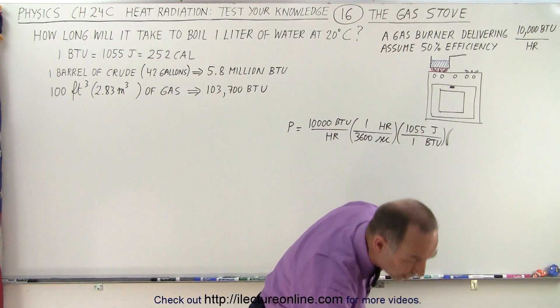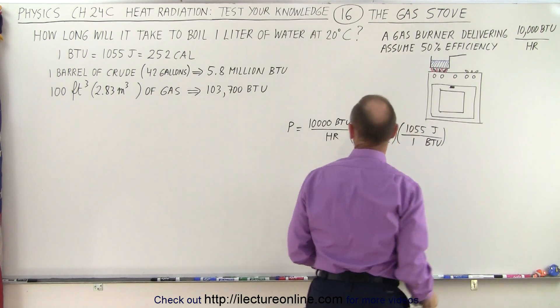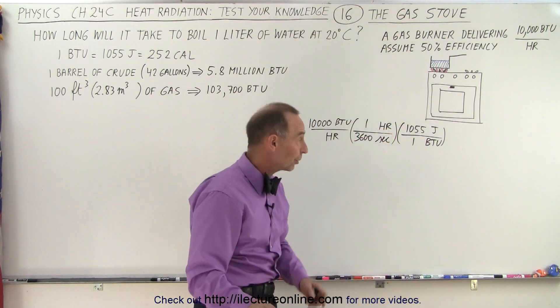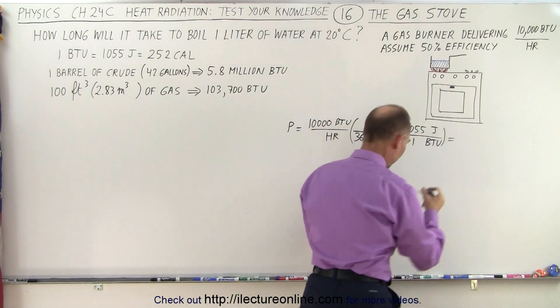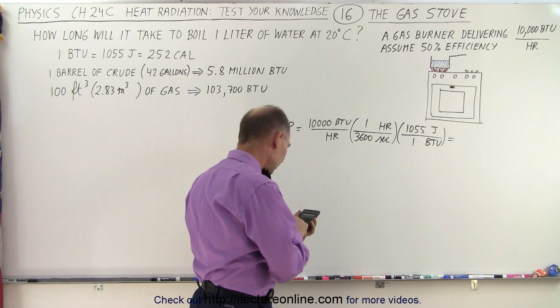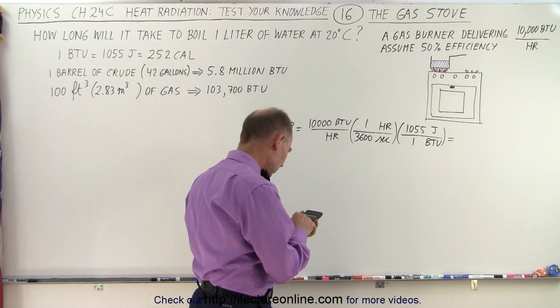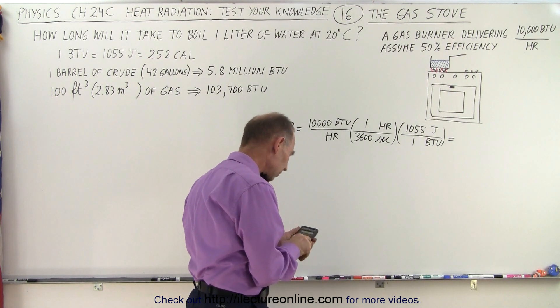Let's first calculate the amount of power received by the burner in terms of joules per second. All right, let's see what that is equal to. So, we'll get 10,000 divided by 3,600 and times 1,055. That gives us 2,930. So, that's 2,930 joules per second or watts.